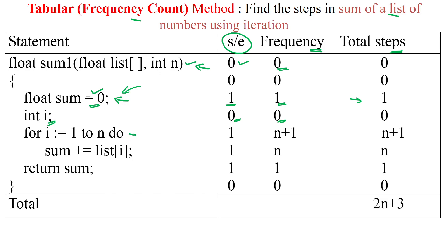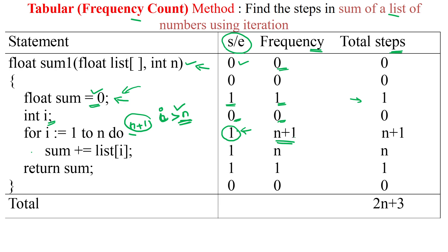The for loop is considered one unit of time for each execution. It will enter the loop n times, and when i is greater than n it will exit. However, this condition is checked one extra time at exit, so it checks n plus one times total. Therefore, this one unit of time is consumed n plus one times, giving a frequency of n plus one and a total step count of n plus one for this statement.